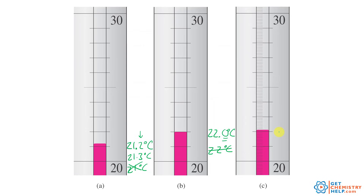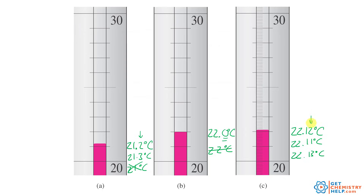On the third thermometer, tens are marked, so it's 20-something; ones are marked — 21, 22 — and even the tenths are marked, so it's just above 0.1. But I can't stop there — I have to go one more digit, so I say 22.12 degrees Celsius. You might say 22.11 or 22.13 degrees Celsius — both are fine because we're all estimating in the hundredths place, since the tens, ones, and tenths are all clearly marked. Which of these values is the most precise? The one with more significant digits is more precise.